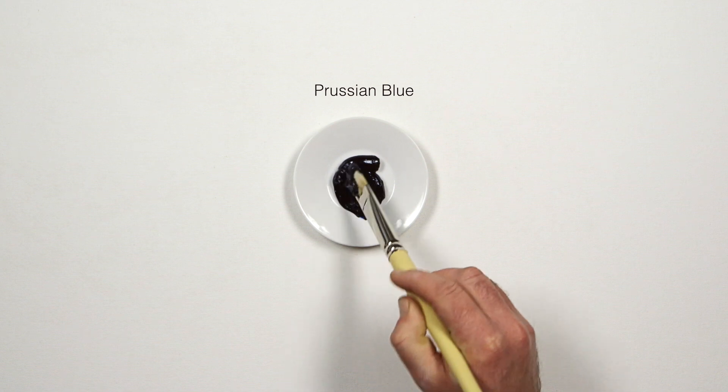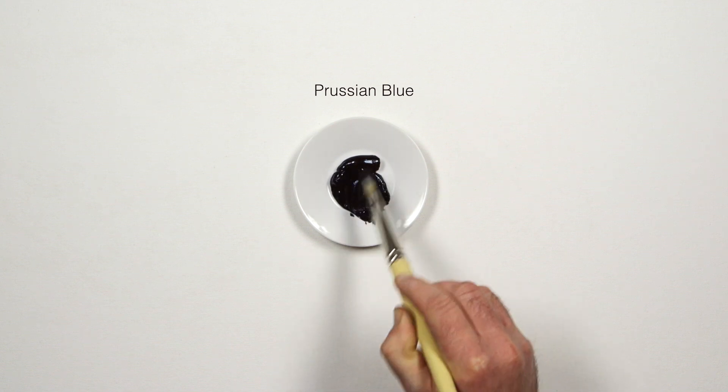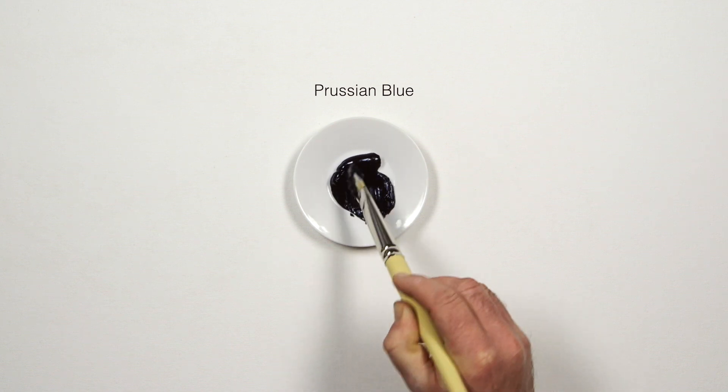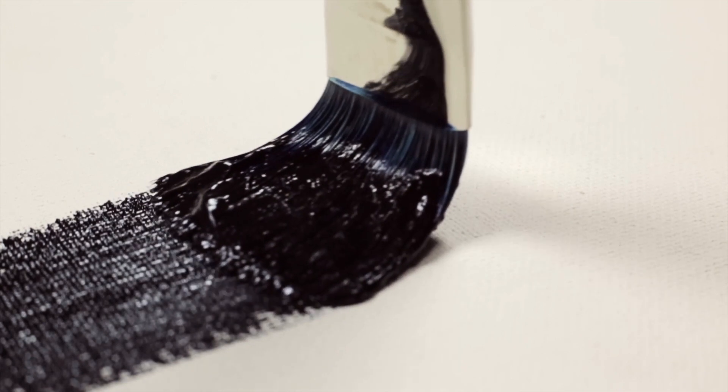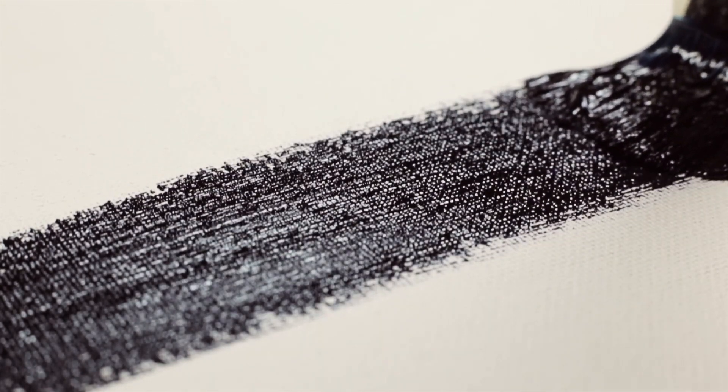Prussian blue is one of my favorite dark tones to use and a very powerful color. It's perfect for creating your own blacks by adding burnt umber. When I apply it to the canvas, you will notice the deep mass tone.